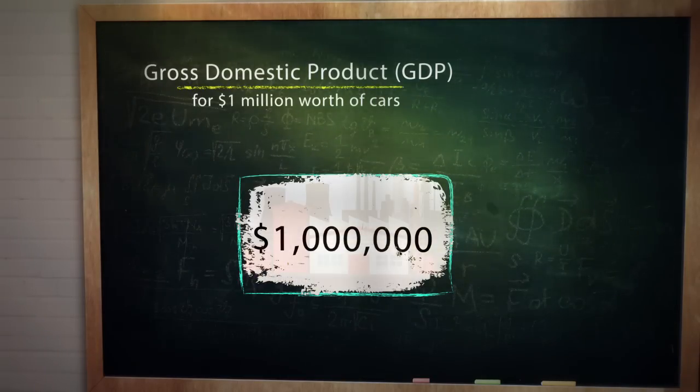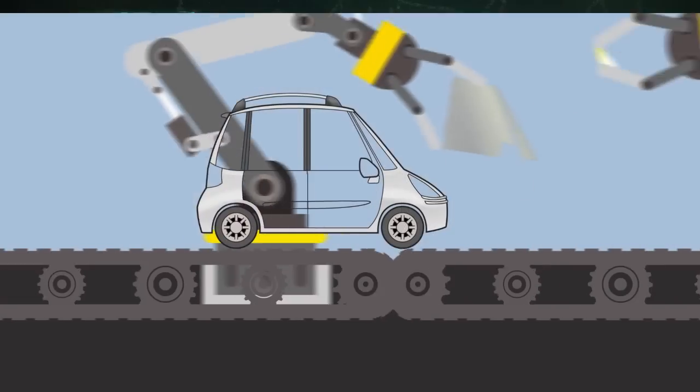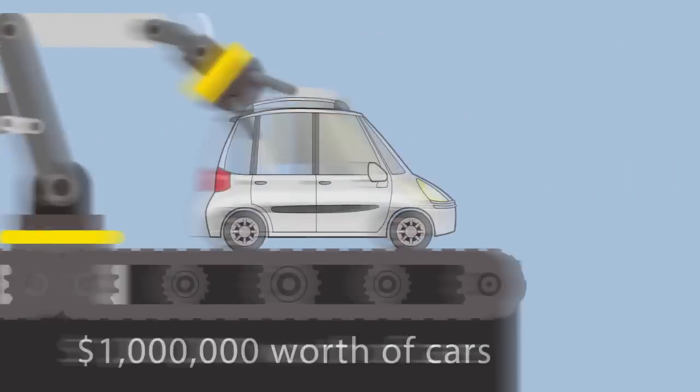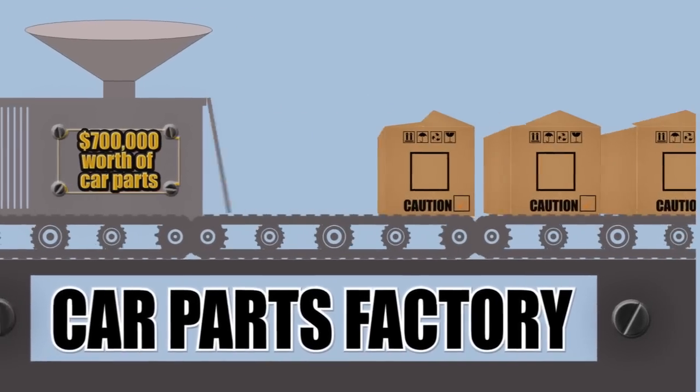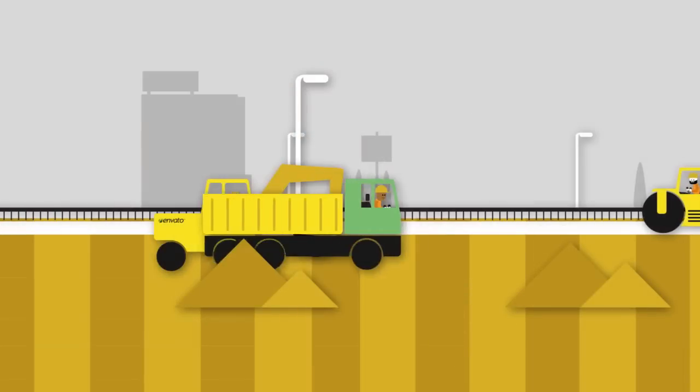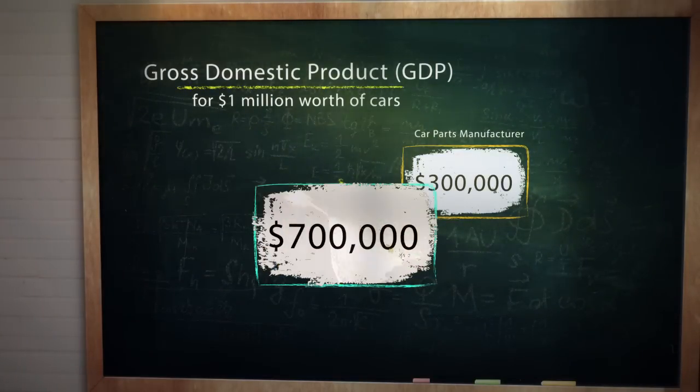To summarize, in the example that was just illustrated, we identified four industries that were included in our little economy. Those industries were the automobile assembly industry, the motor vehicle parts manufacturing industry, the steel manufacturing industry, and the iron ore mining industry. The sum of the value added of each industry gave us the total GDP for the economy.